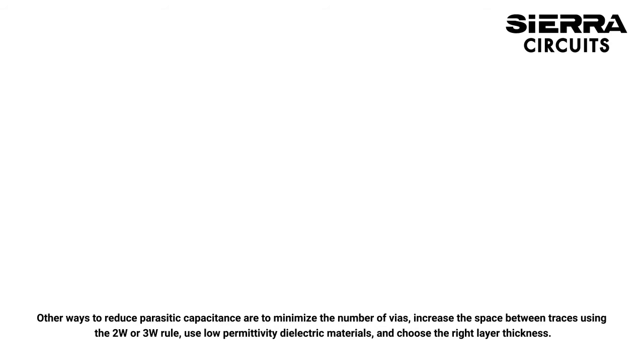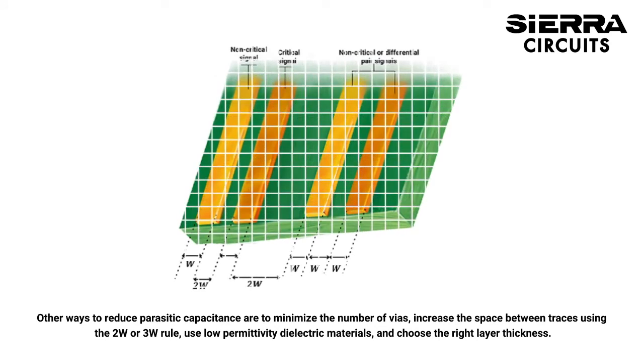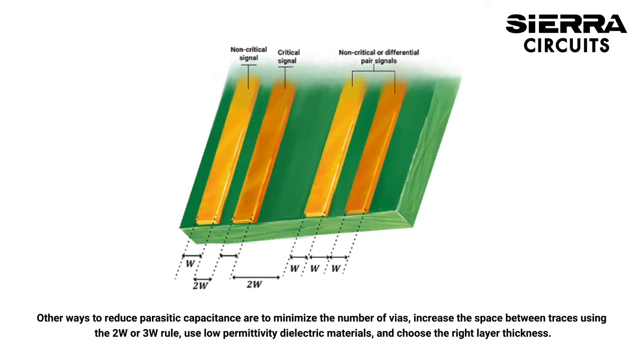Other ways to reduce parasitic capacitance are to minimize the number of vias, increase the space between traces using the 2W or 3W rule, use low-permittivity dielectric materials, and choose the right layer thickness.